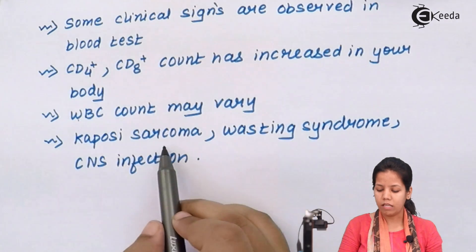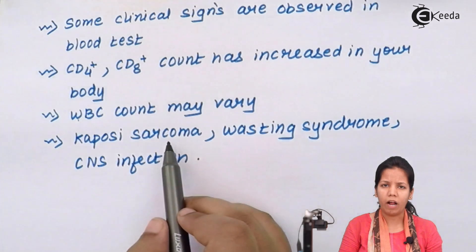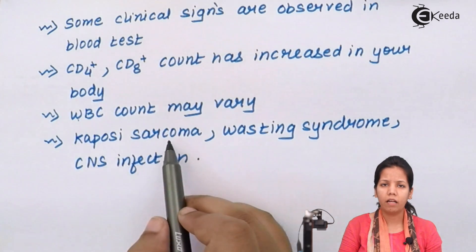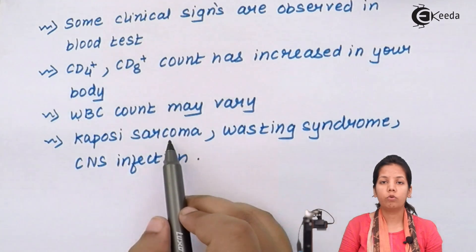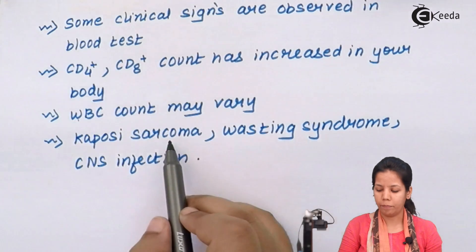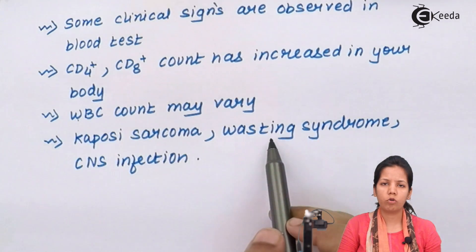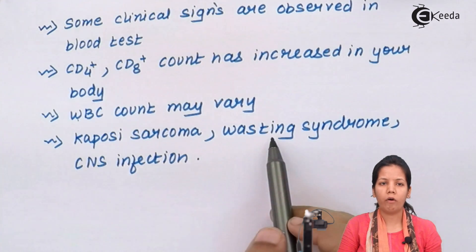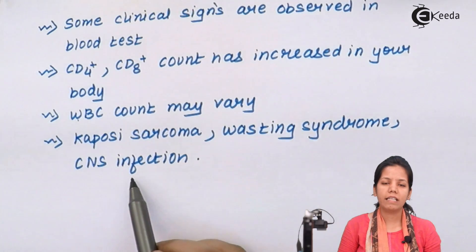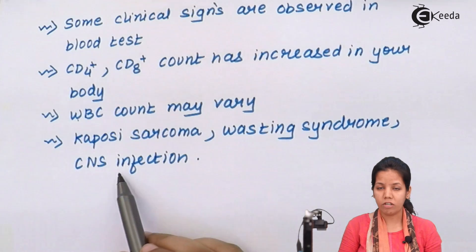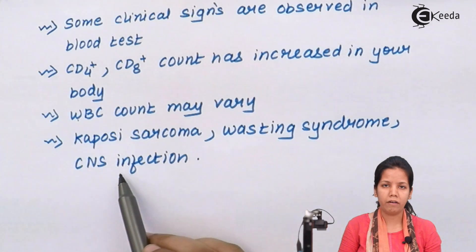Kaposi Sarcoma — that is red and brown big patches all over your body, especially at your back — is a common sign or symptom which could be caused due to HIV virus gaining entry in your body. Apart from that, Wasting Syndrome could be associated with increase or decrease of your body weight. And lastly, CNS infection — that is central nervous system or brain infection — is also a symptom.